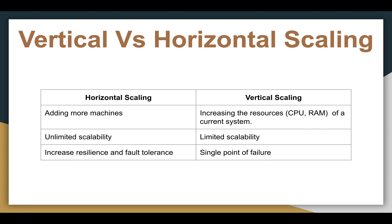Another important point: horizontal scaling increases overall system resilience and fault tolerance. For example, if we have four machines serving traffic and one goes down, the remaining three keep serving user requests and we don't encounter any downtime. Vertical scaling, on the other hand, is a single point of failure — we have one machine upgraded to be more powerful, but if it goes down for any reason, our whole system goes down.